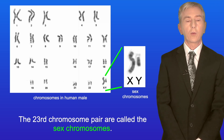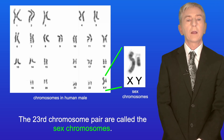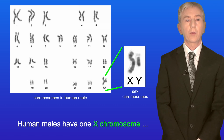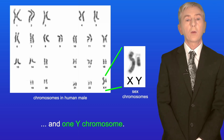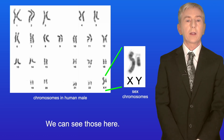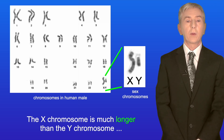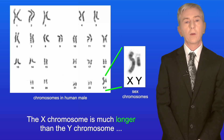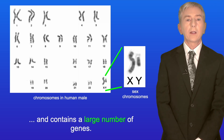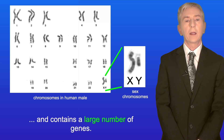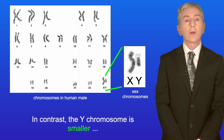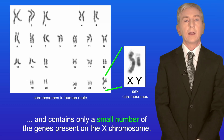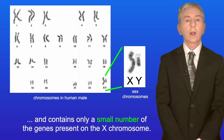The 23rd chromosome pair are called the sex chromosomes. Human males have one X chromosome and one Y chromosome, and we can see those here. The X chromosome is much longer than the Y chromosome and contains a large number of genes. In contrast, the Y chromosome is smaller and contains only a small number of the genes present on the X chromosome.